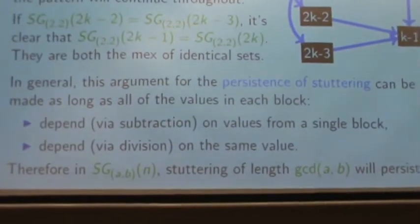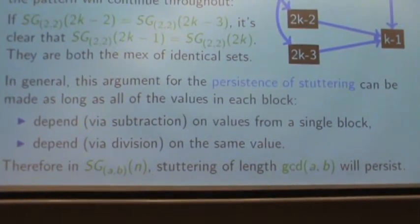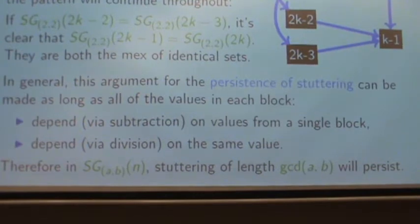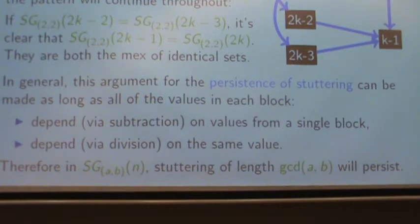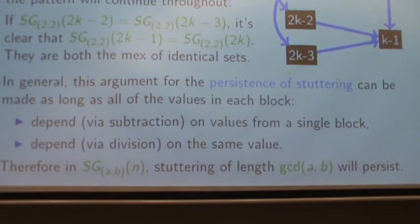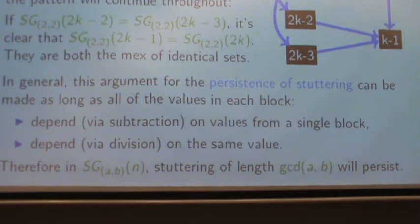We can make this argument more generally. It really depends on two facts: that you have a block, and if you look at what it depends on under subtraction, it's values from a single block; and every block you're looking at depends on the same value under division. As long as those two things are true, we're going to have the same inductive step argument. And that's going to happen exactly for blocks of length GCD(A, B). GCD(2, 2) is 2, so we get stuttering of length 2.